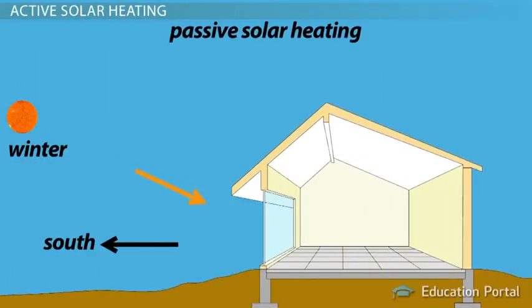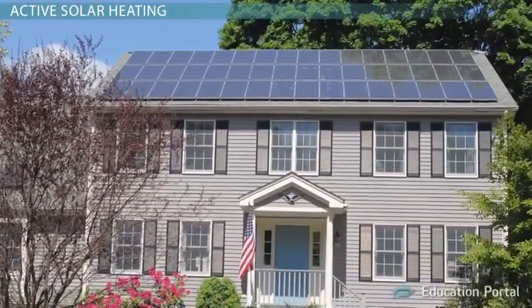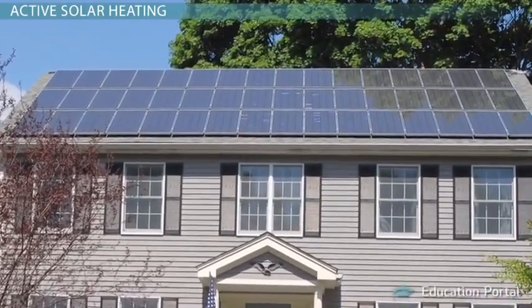Active solar heating is a more involved process than passive solar heating. While passive solar heating employs methods to capture heat from the Sun, it does nothing to actively enhance the process. In contrast, active solar heating uses mechanical and electrical equipment to enhance the conversion of solar energy to heat and electric power. While more involved, active solar systems can generate much more heat than a passive system.